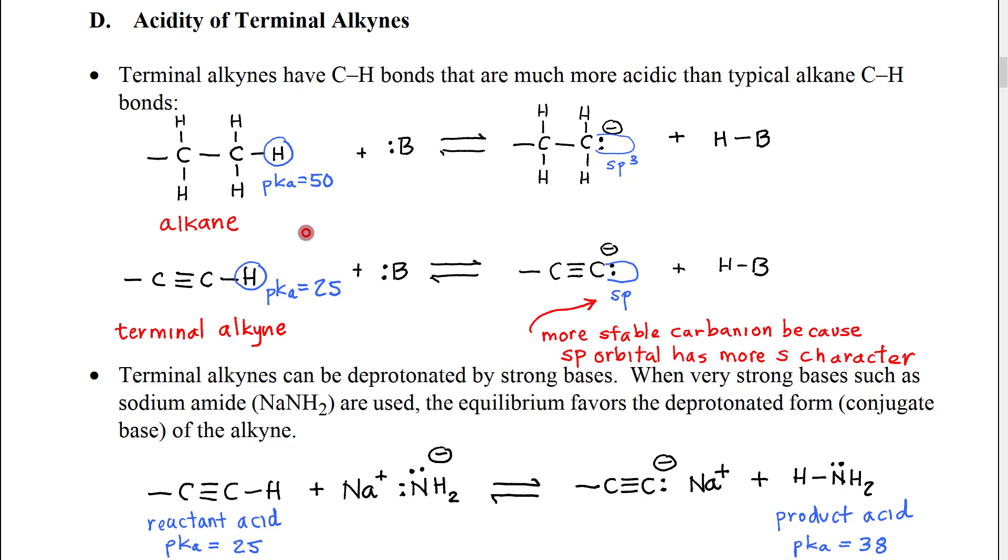And it turns out that these carbon-hydrogen bonds are much more acidic than a typical alkane carbon-hydrogen bond. So if we look here, for example, this is an alkane, just a typical generic alkane.